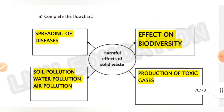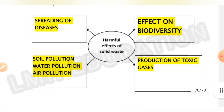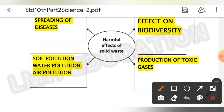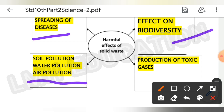Next is question number two: complete the following flow chart. The answers are: spreading the disease, effect on biodiversity, soil pollution, water pollution, air pollution, and production of toxic gases.